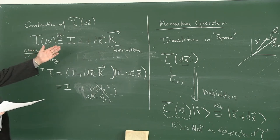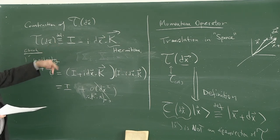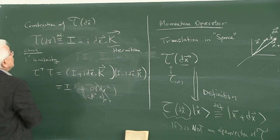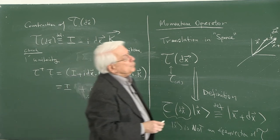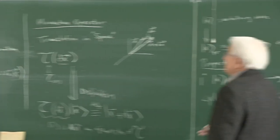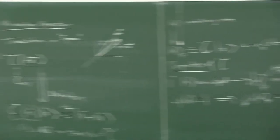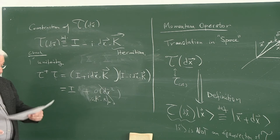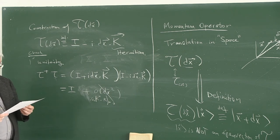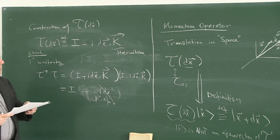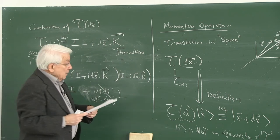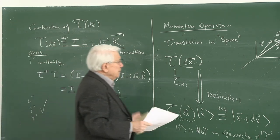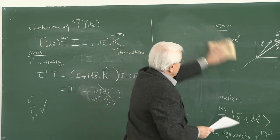Now let's see how the translation operator acts in relation to the position operator. I write the translation definition and act on it by the position operator first. What I get is X τ|x⟩. Using the eigenvalue equation for X, the right-hand side becomes x times |x + dx⟩. Separately, I start with the position eigenvalue equation and act on it by T: left-hand side is T X |x⟩ = x · T|x⟩ = x|x + dx⟩. I'm trying to find the commutation relation between the translation operator and the position operator.